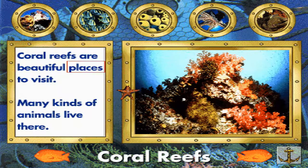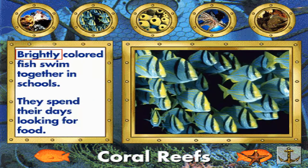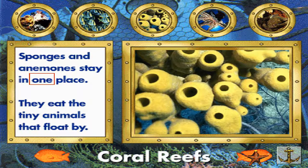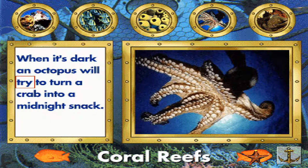Coral reefs are beautiful places to visit. Many kinds of animals live there. Brightly colored fish swim together in schools. They spend their days looking for food. Sponges and anemones stay in one place. They eat the tiny animals that float by. When it's dark, an octopus will try to turn a crab into a midnight snack.